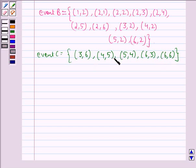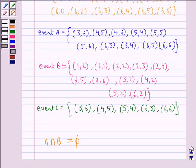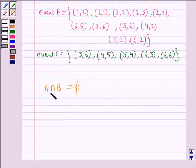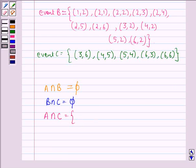Now, we have to tell which pairs of these events are mutually exclusive. First of all, we consider A intersection B. We see that A intersection B is equal to empty set because no sample points are common to these two sample spaces. So, the intersection is empty. Now, we consider B intersection C. Again, this will be equal to empty set.